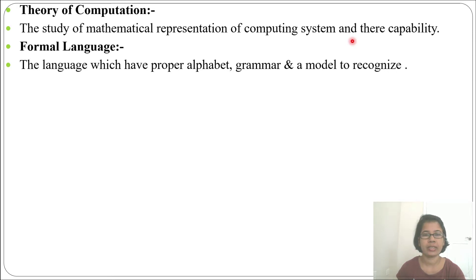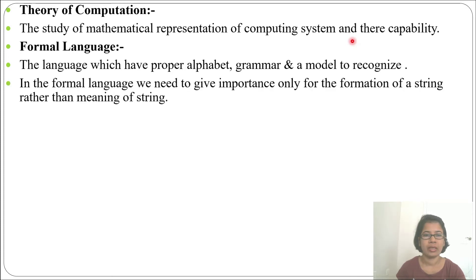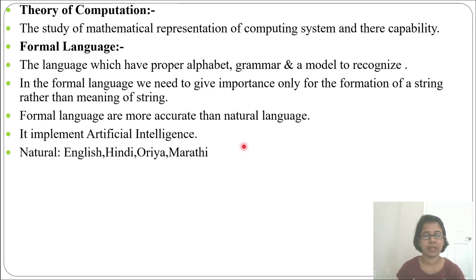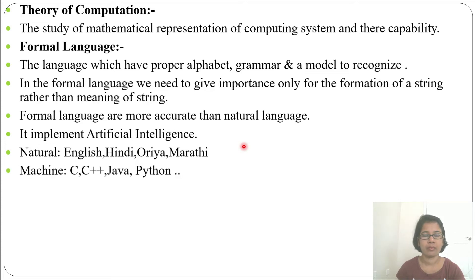In formal language we need to give importance only to the formation of a string rather than the meaning of the string. Formal language is more accurate than natural language; it implements artificial intelligence. Natural language is like English, Hindi, or Marathi — languages that humans use to communicate with each other. Machine language is like C, C++, Java, Python — what a machine can understand — and that is called machine language.